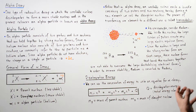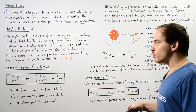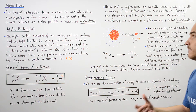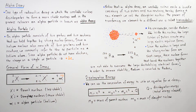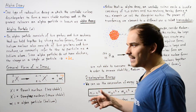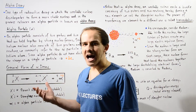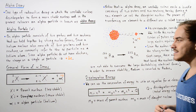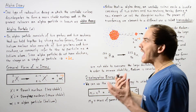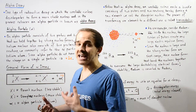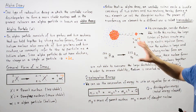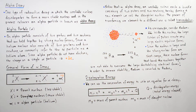The process by which we transform one element into a different element is known as transmutation, so alpha decay is one type of transmutation. To gain more insight into how and why alpha decay takes place, let's look at the following example.